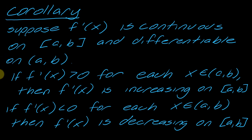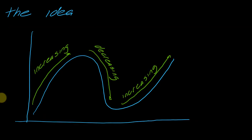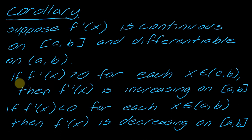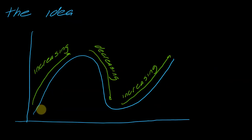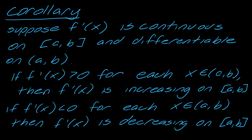This corollary is basically justifying what we were just talking about. Where the function is increasing, the derivative is positive. Where it's decreasing, the derivative is negative. So all of my points on the increasing part, if I were to plug them in, they would always give something positive. And when I get to the decreasing part, that would be a negative derivative. Then for all the points in the next increasing region, those would all be positive again. That is what this corollary is getting at.